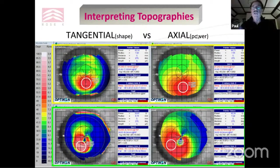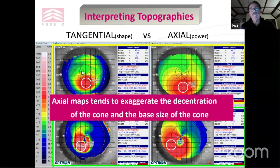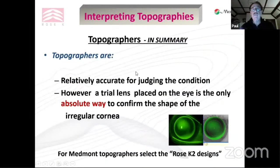Also consider tangential versus axial settings. Tangential talks about shape; axial talks about power. Axial maps tend to exaggerate the size and decentration of the cone. I prefer tangential maps because when you put a contact lens on the eye, you get a fluorescent pattern that better corresponds with the map. In summary, I find topography is rarely accurate enough for judging the condition alone. Until you place a contact lens on the eye, it's very difficult to know exactly what is going to happen with that cornea.